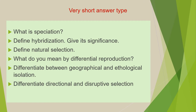Next is: differentiate between geographical and ethological isolation. And the last question of this category is: differentiate between directional and disruptive selection.